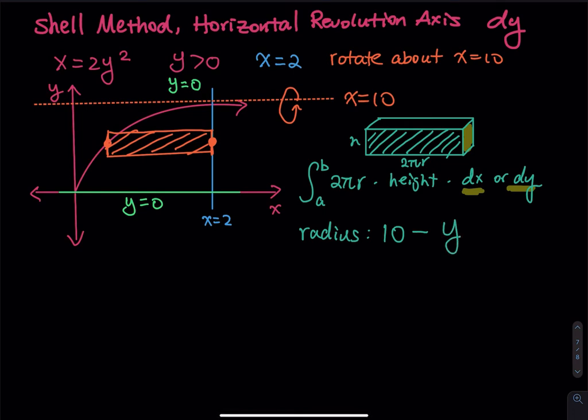So what is 10? That is x equals 10 minus the y is any y in the region. So any y in the region. So that will be your radius.